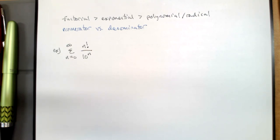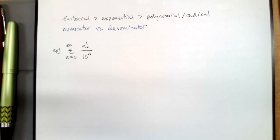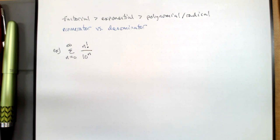It's important to realize that factorial will dominate exponential. We tend to use 'exponential' to just mean fast growth, but that's not actually true. Something growing very quickly is not necessarily growing exponentially. If you say something is growing exponentially, you are making a specific mathematical claim.